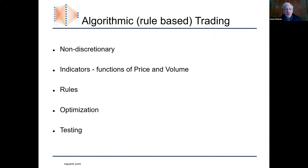Algorithmic trading has these characteristics: it's non-discretionary, meaning there's no input from you once you decide on the system to follow. This is important because a system that is discretionary really can't be backtested, but a completely non-discretionary system can be. Indicators are basically functions of price and volume — for me mostly price. It involves rules. The systems can be optimized, and most importantly they can be tested. If you come from a scientific background and are familiar with the scientific method, you know that testing and proving hypotheses is very important.